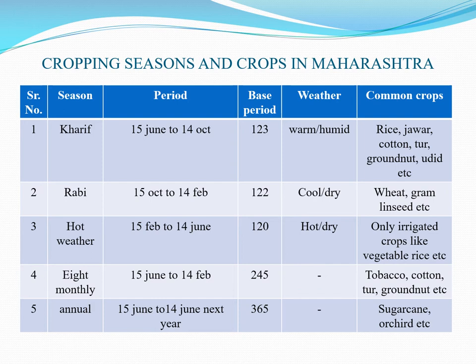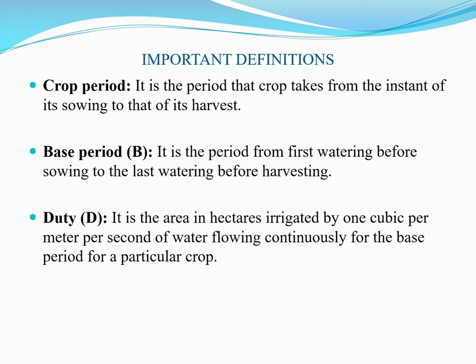For the eight-monthly season, the period is from 15 June to 14 February, with a base period of 245 days. Common crops in the eight-monthly season include tobacco, cotton, toor, and groundnut. For the annual season, the period is from 15 June to 14 June of the next year, with a base period of 365 days. Common crops in the annual season include sugarcane and orchards.